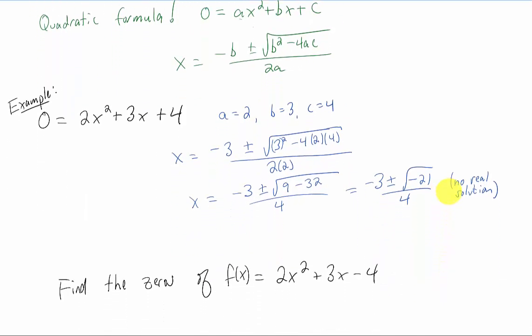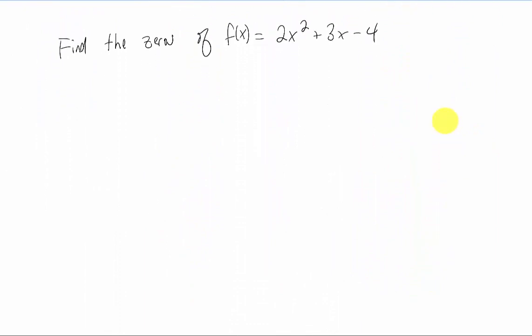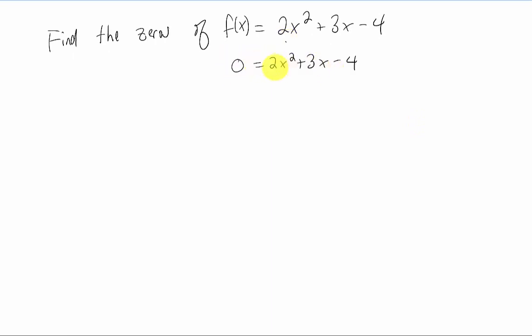What if we wanna find the zeros of two x squared plus three x minus four? Well what we do is replace the function with zero. We might try to factor this right hand side, but we can't. So we have to use the quadratic formula.